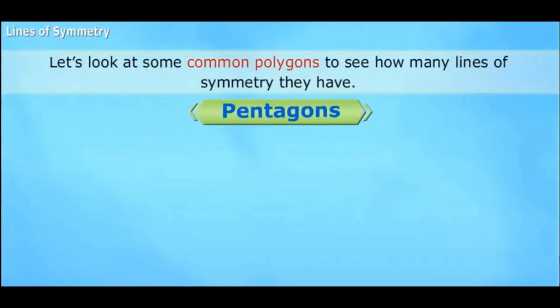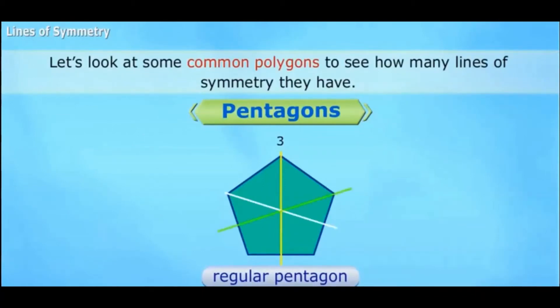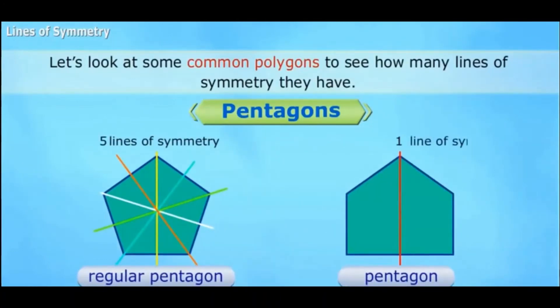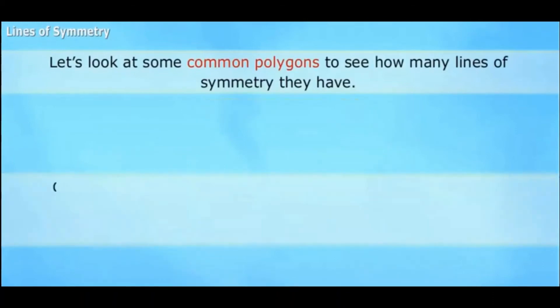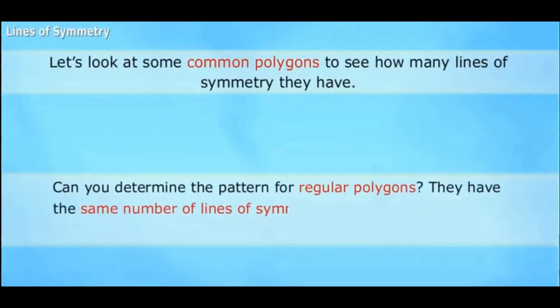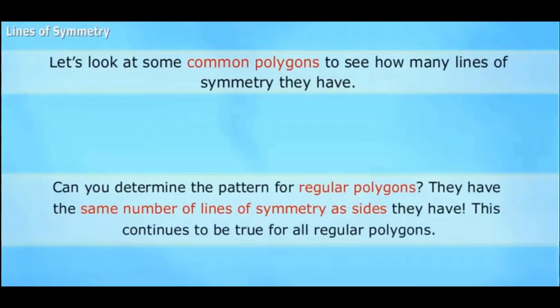A regular pentagon has five lines of symmetry: 1, 2, 3, 4, and 5. This pentagon has only one line of symmetry. Can you determine the pattern for regular polygons? They have the same number of lines of symmetry as the number of sides. This continues to be true for all regular polygons.